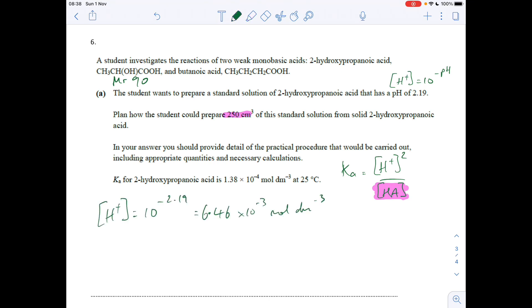First thing: the H+ concentration is 10 to the minus 2.19, so that's 6.46 times 10 to the minus 3 moles per decimeter cubed. Then I've just rearranged the Ka expression so I've got the HA concentration equal to H+ concentration squared over Ka.